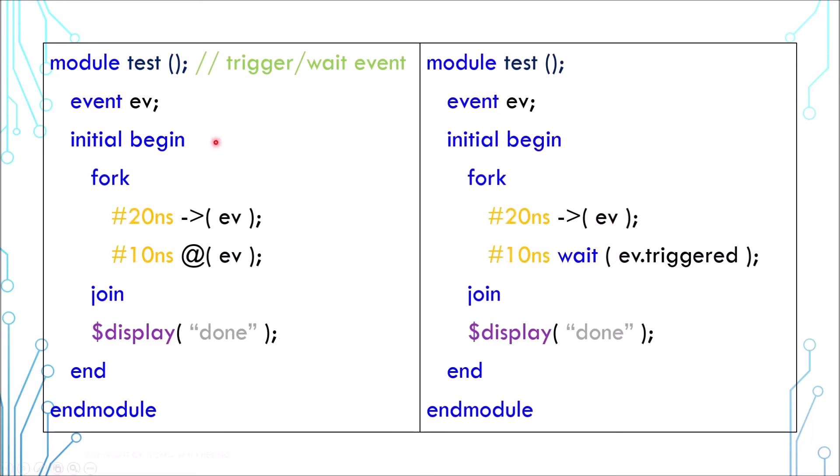This is the same example as before, but we change the delay. Thus blocking will happen first and then the event trigger will happen next. As a result, the block will see the trigger and complete, and the join statement will happen and the display will happen. Same thing with the example of wait statement.